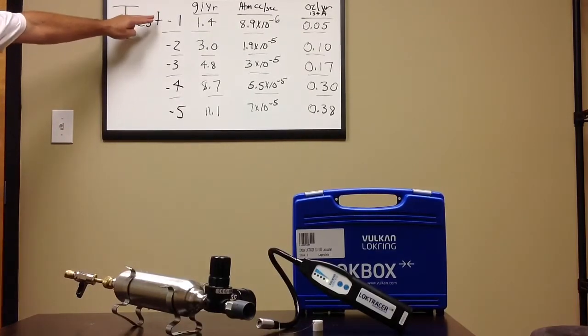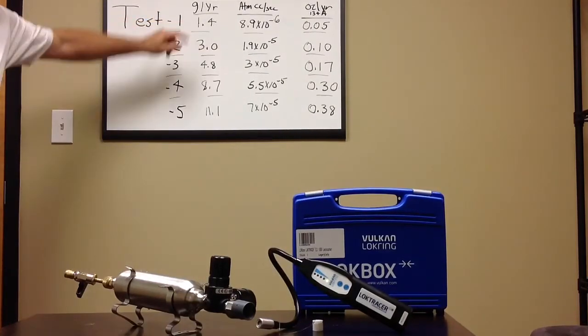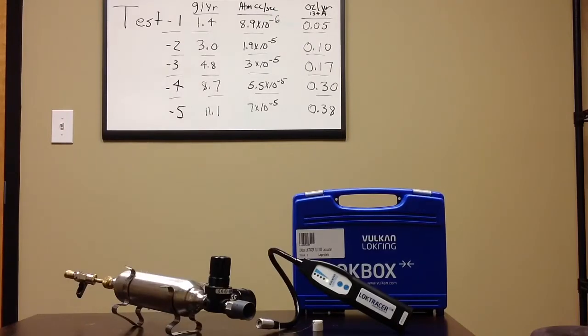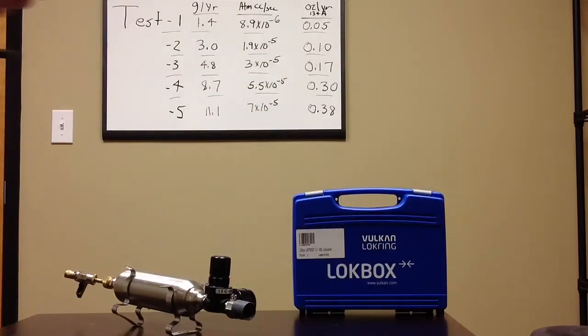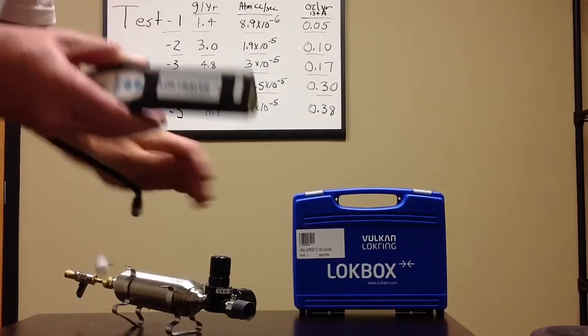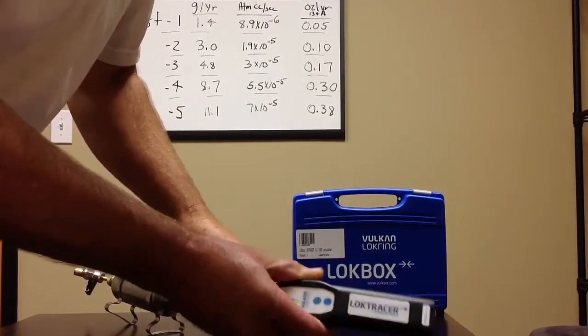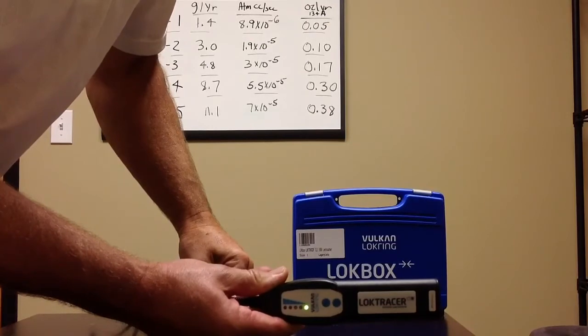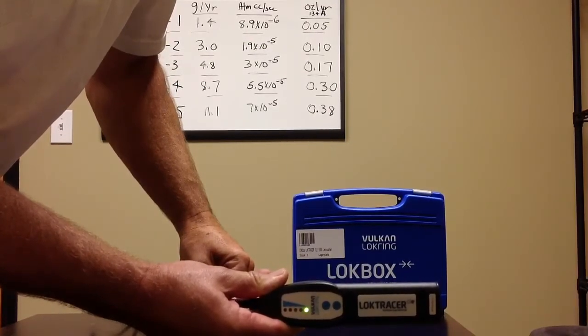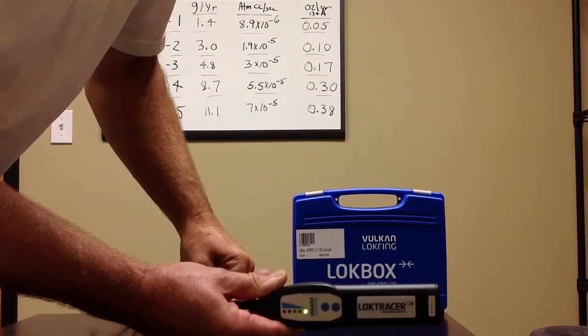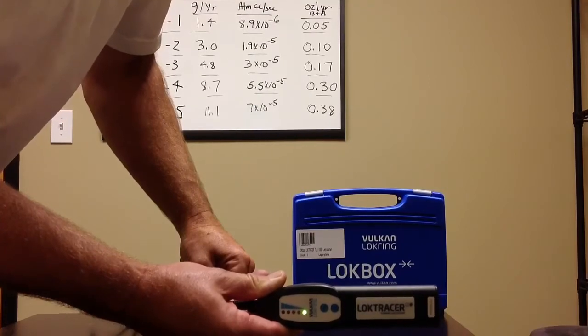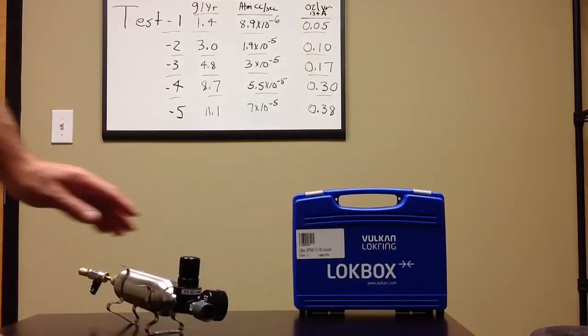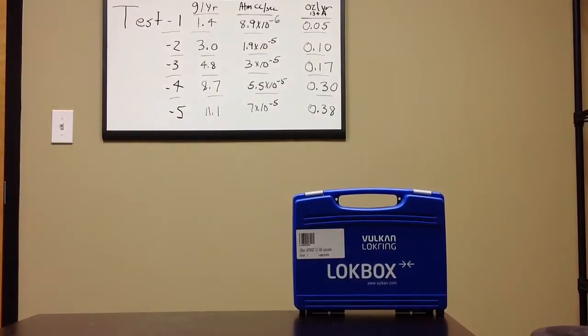So the first test point I have the leak set for is 1.4 grams per annum. So I'm going to show you the signal we would get with that. It's a very small leak, a little bit of a signal there. So you can detect it, but like I said, it's a very small leak.